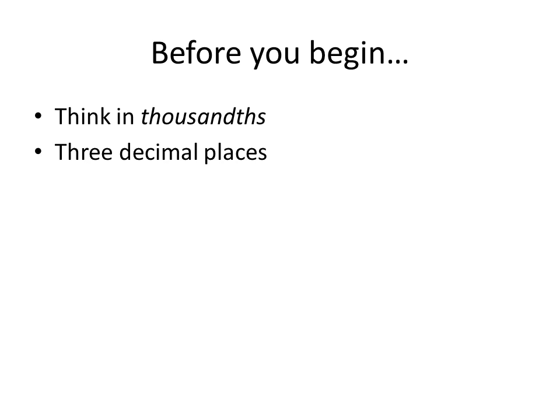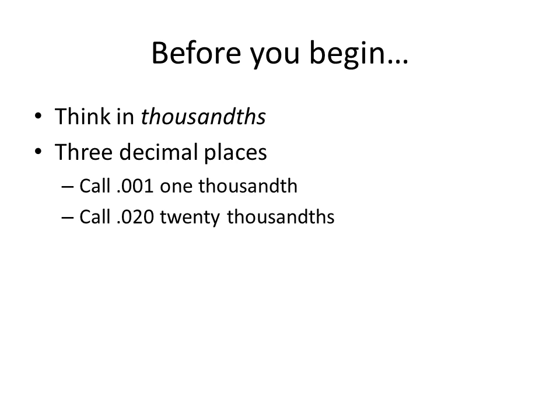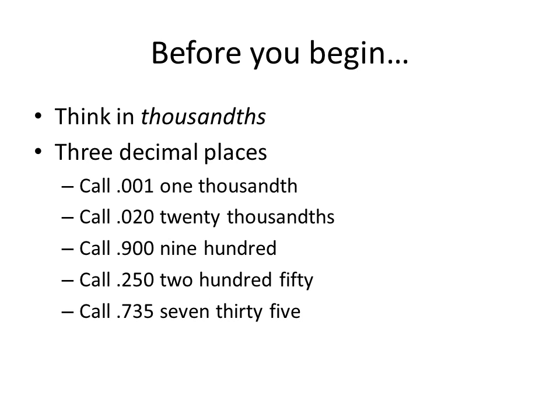If we always set our thought process to three decimal places, a micrometer will work pretty easily. This is the way that machinists think. So 0.001 is one thousandth, 0.020 is twenty thousandths, 0.9 would be nine hundred thousandths. Three-quarters of an inch you would say is 0.375—think of that as 375 thousandths.